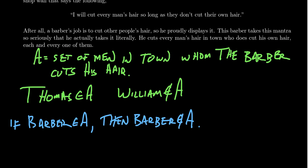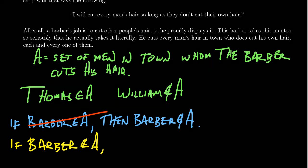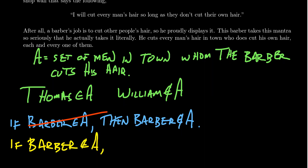The barber only cuts the hair of people who don't cut their own hair. So if he cuts his own hair, that's a man who cuts his own hair, and he doesn't cut the hair of someone who cuts their own hair. So it turns out the barber can't belong to set A, because if he belonged to set A, he would have to not belong to set A. But what if we consider the other possibility? If we put the barber in the set, we got a contradiction, so it must be the case that he doesn't belong to A.